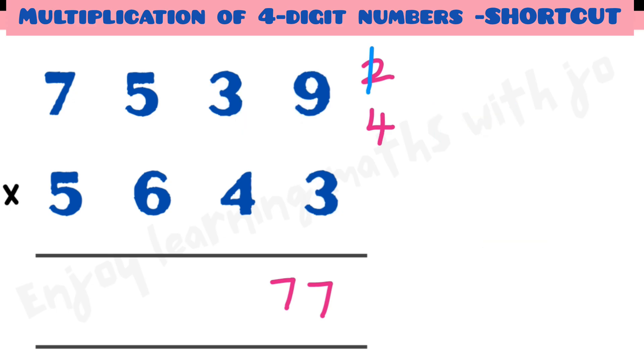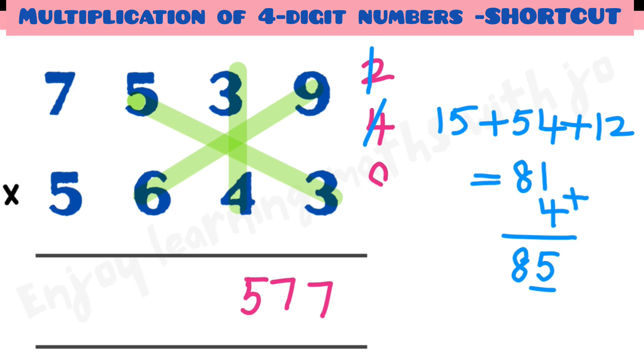Third step: 5 times 3 is 15 plus 9 times 6 is 54 plus 3 times 4 is 12. We get 81 plus remaining 4 is 85. So we write 5 here and remaining 8.